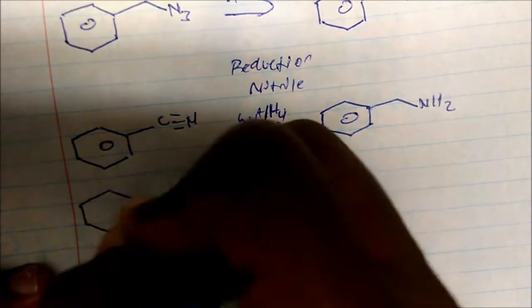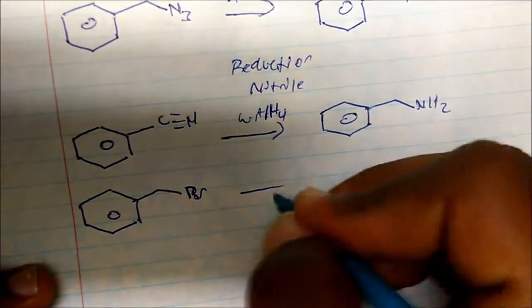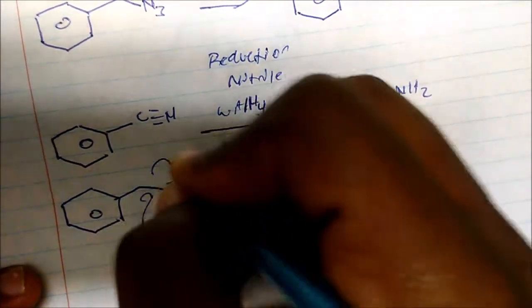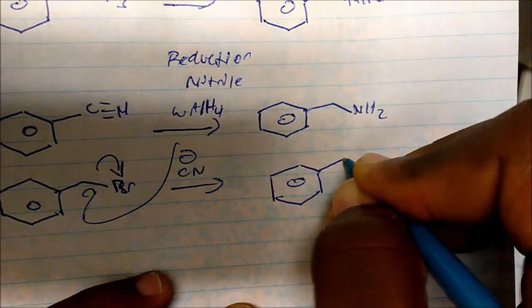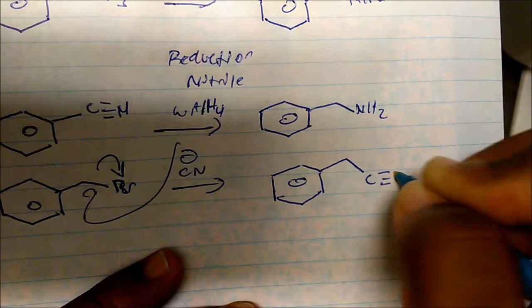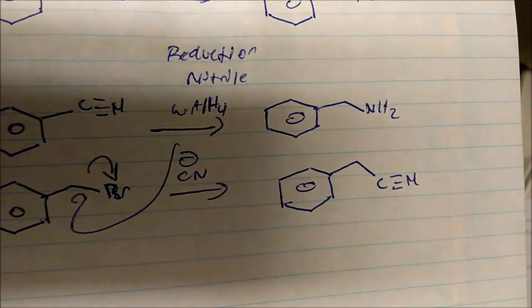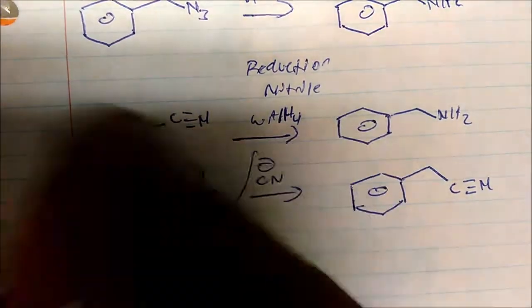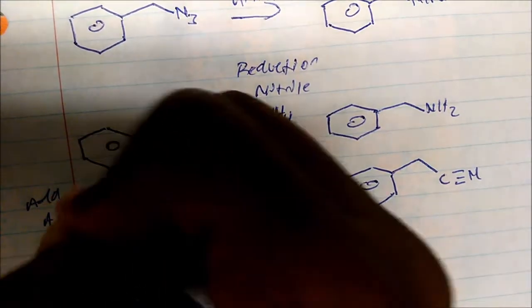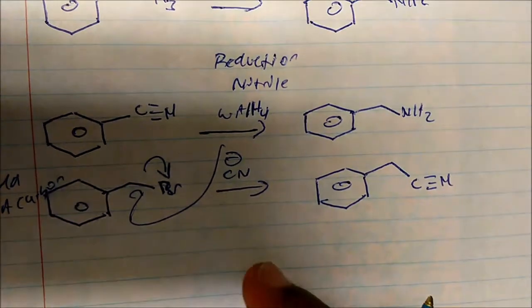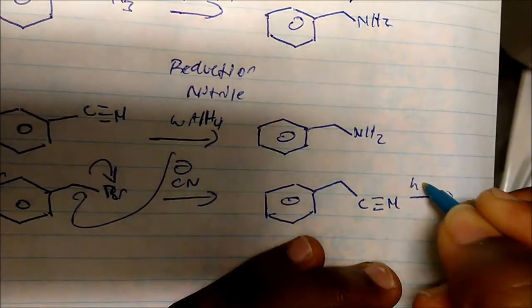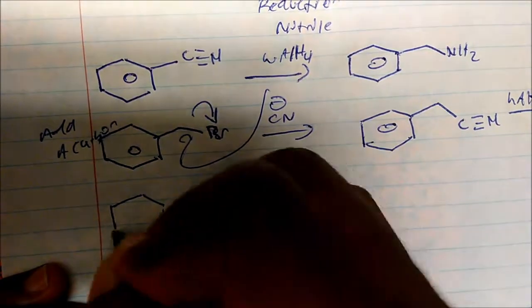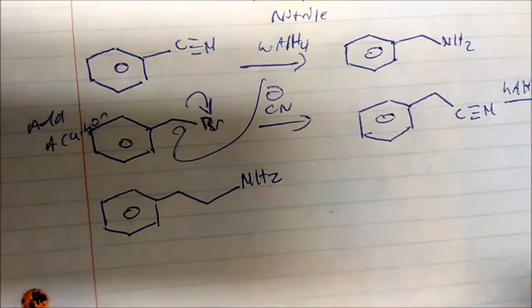To create the nitrile, we take a simple SN2 target. For example, we take benzyl bromide and add CN⁻ — SN2 chemistry occurs, CN⁻ attacks and displaces the bromine, and we get a carbon bonded to a carbon with a nitrogen. The important thing about nitrile chemistry is that we add a carbon — when CN⁻ attacks the SN2 target, we add one carbon to the chain.